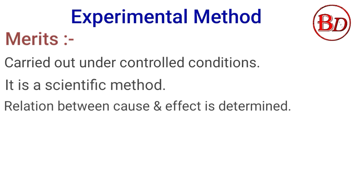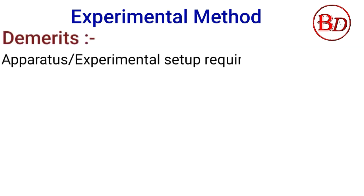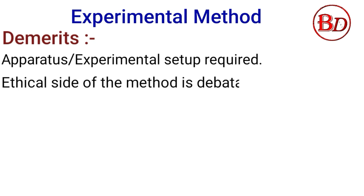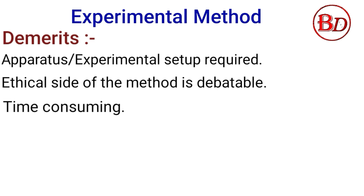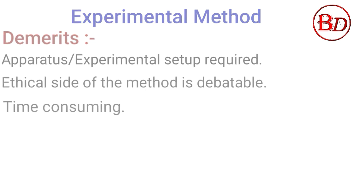Demerits of the experimental method: Apparatus or experimental setup is required. The ethical side of this method is debatable — an individual is subjected to a series of observations, which can be considered a form of experiment, so the ethical side is often questioned. It is also time consuming, as this method requires a series of sessions.